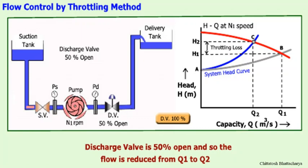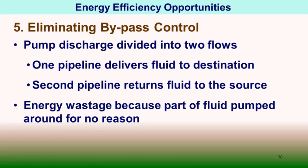Variable speed drives are a better solution than throttling for energy-efficient operation. Flow can also be reduced by a bypass control system — dividing the discharge into two pipelines, one delivering to the destination and one returning fluid to the suction side. However, this recirculates part of the fluid for no purpose and wastes energy. This option should be avoided — recirculation is essential only at initial startup stages and should be gradually replaced by variable speed drive control.